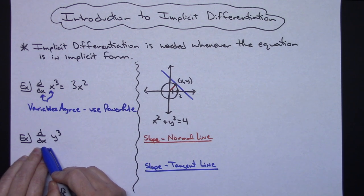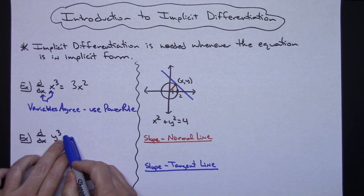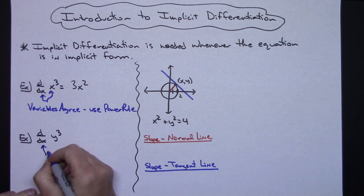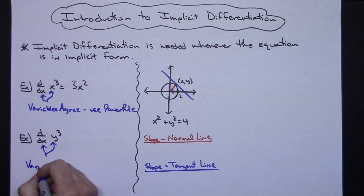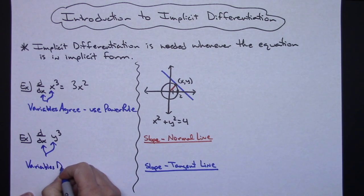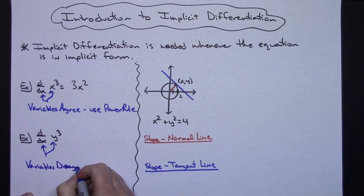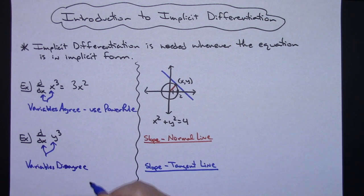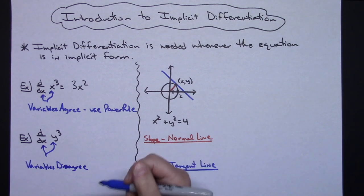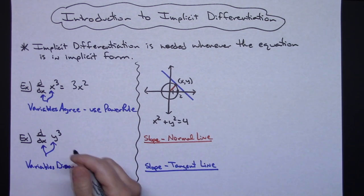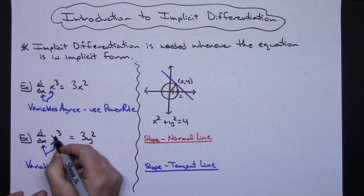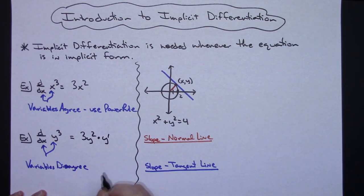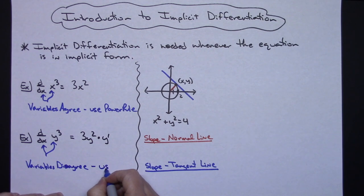Now if I'm trying to take the derivative of y to the third, notice that the variables disagree. I'm trying to take the derivative with respect to x, but I've got a y to the third in there. So my variables disagree, which means when I take the derivative, I have to apply a chain rule — that's your implicit differentiation. So I do power rule like normal: 3y squared, but then the inside function is a y, so I put a y prime in there. That's the chain rule.